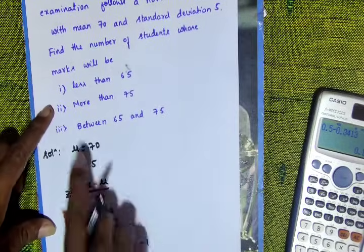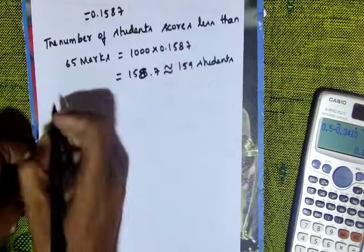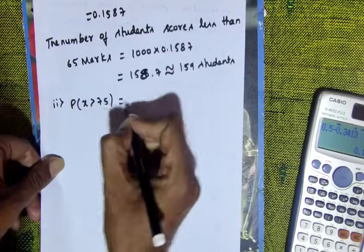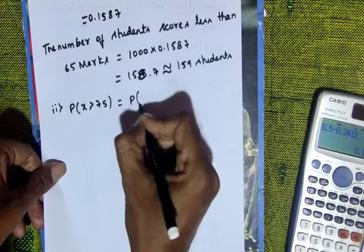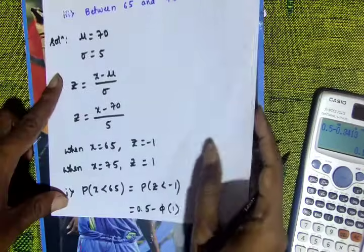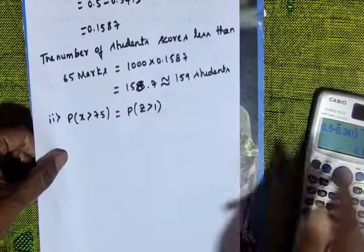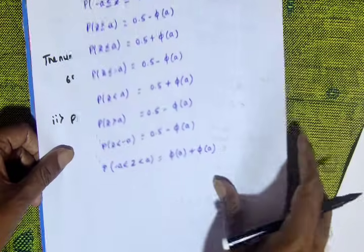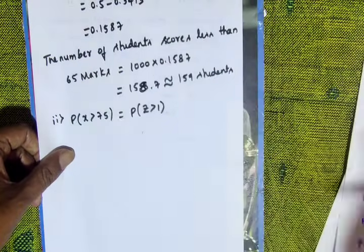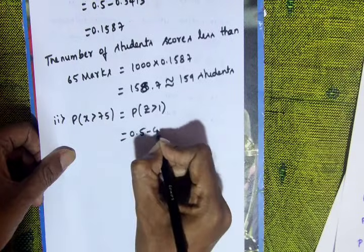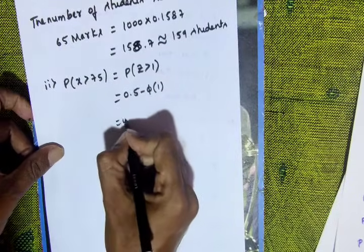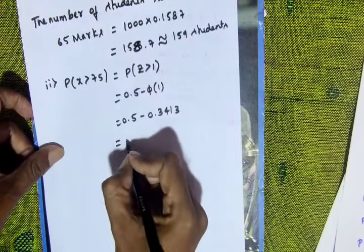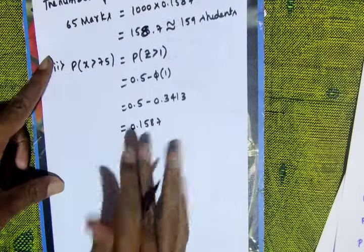Second question: more than 75. P(Z greater than 1) equals 0.5 minus phi of 1, which equals 0.5 minus 0.3413 equals 0.1587.